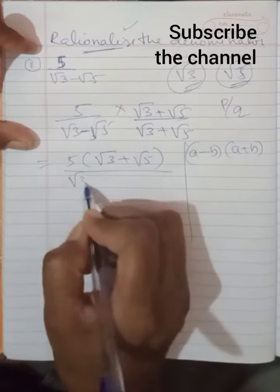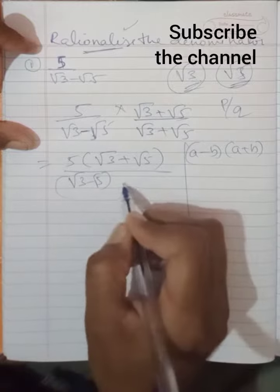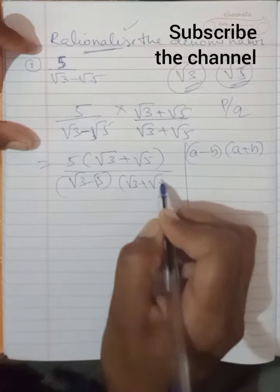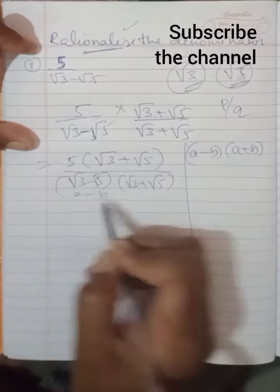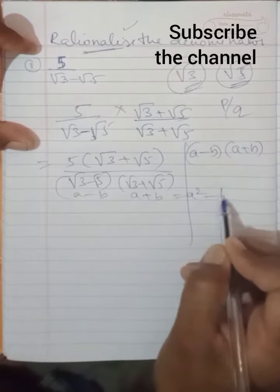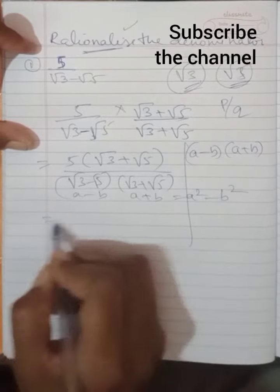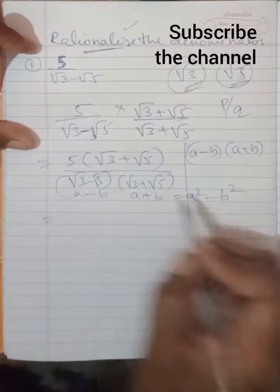I'll write one more step if you want. Look at this one here: root 5 into root 3 plus root 5. This is a minus b and a plus b, which is equal to a square minus b square. So now multiplication of this one, 5 into...